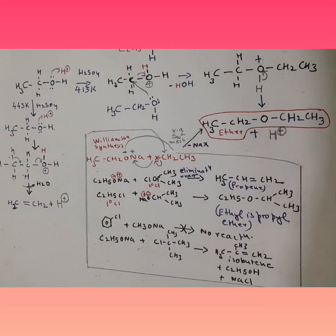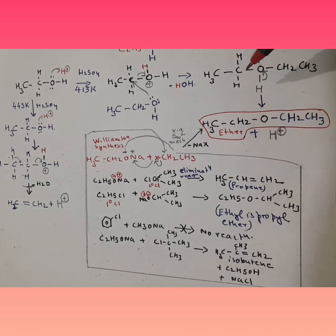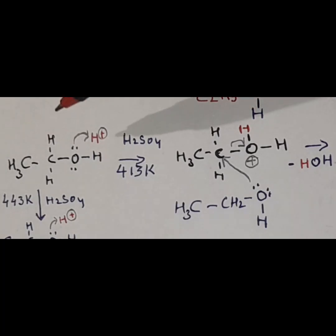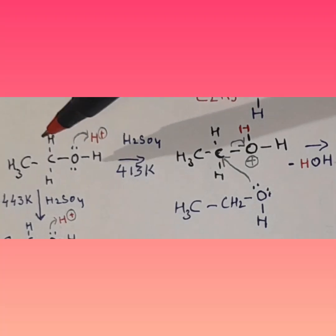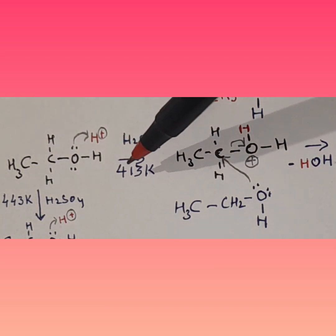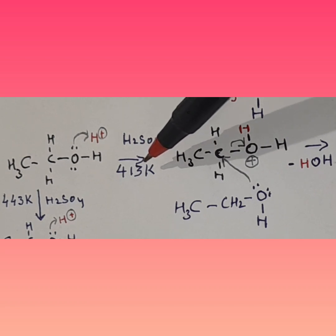Let's understand the synthesis of ether — precisely, the synthesis of diethyl ether. We start with ethanol in the presence of sulfuric acid at 413 K.